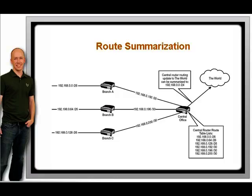If subnetting is the process of lengthening the mask to create multiple smaller subnets from a single larger network, route summarization can be described as shortening the mask to include several smaller networks into one larger network address. As the network grows large, the number of individual networks listed in the IP route table becomes too big for the routers to handle effectively. They get slower, drop packets, and even crash — an undesirable state of affairs.